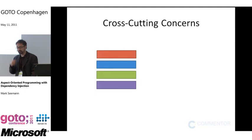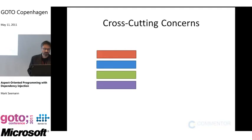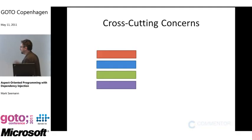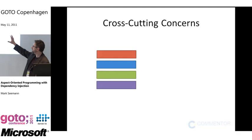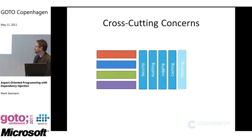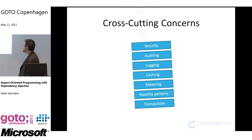So first of all, let's look at what aspect-oriented programming actually is and what kind of problem it tries to address. It tries to address what we call cross-cutting concerns. If you've seen architecture diagrams like a layered software application diagram, you've probably seen cross-cutting concerns illustrated as vertical bars sitting next to the layers.